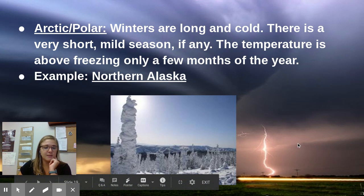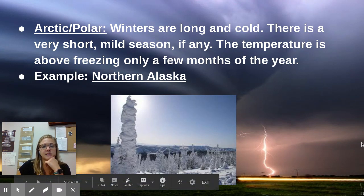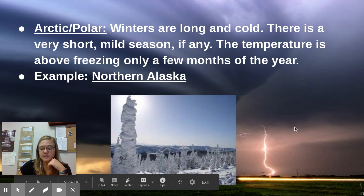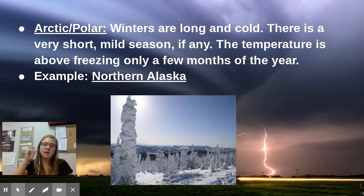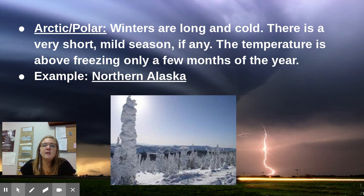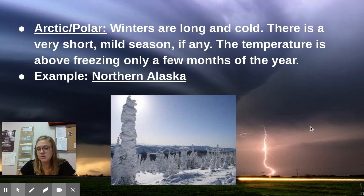Our last major region is the Arctic or polar region. It is very cold — lots of snow, lots of ice, and winters are long and cold. There are sometimes periods with very little sunlight at all. There is a very short, mild season — we wouldn't necessarily call it summer, but it's at least not as cold as normal. The temperature gets above freezing only a few months of the year. Examples include Northern Alaska, Antarctica, and the North Pole.